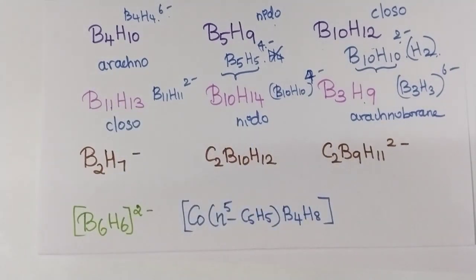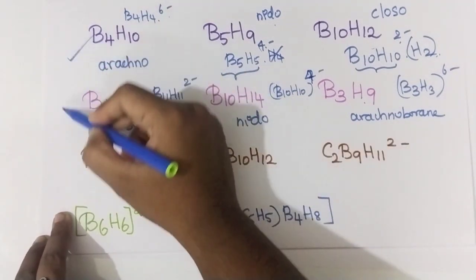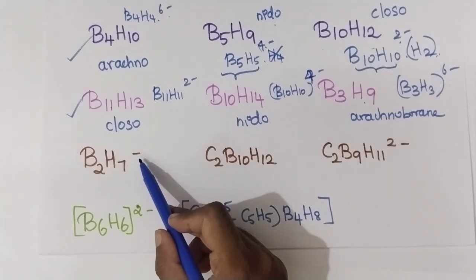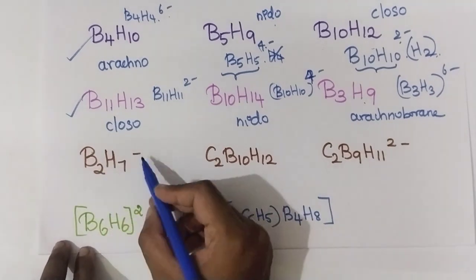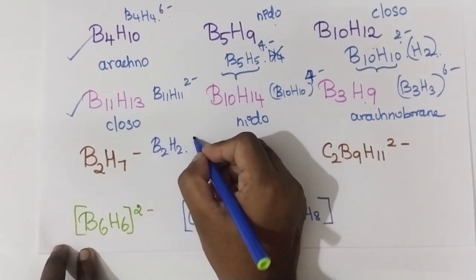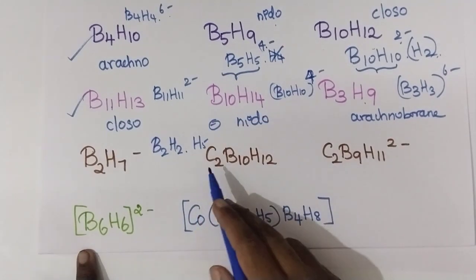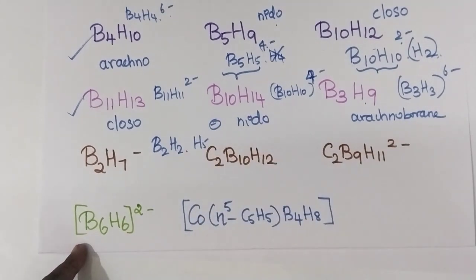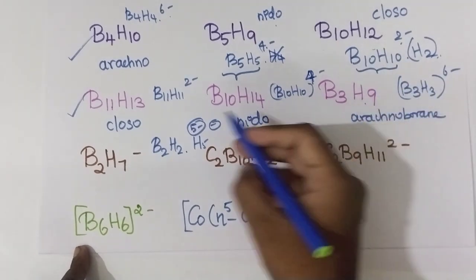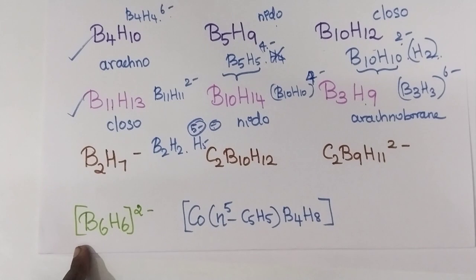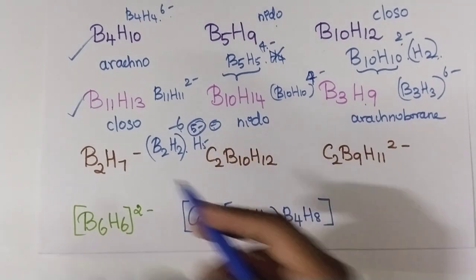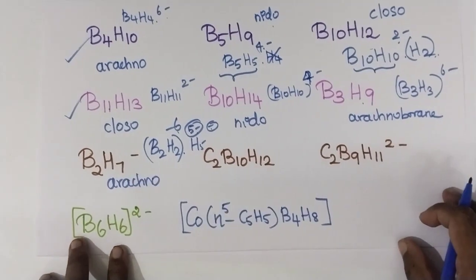So far we have seen for neutral boranes. Now we are going to predict the structure for ionic boranes where a charge is already given. For example B2H7 minus. You write it as B2H2 dot H5, and you are already given a minus charge. H5 means 5 minus, and with the existing minus 1, it totals 6 minus. So B2H2 power 6 minus means it is arachno borane.